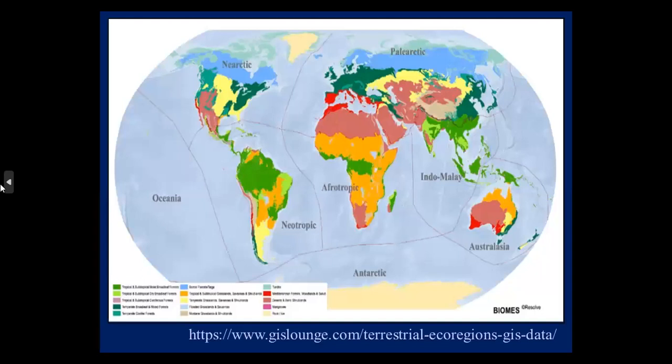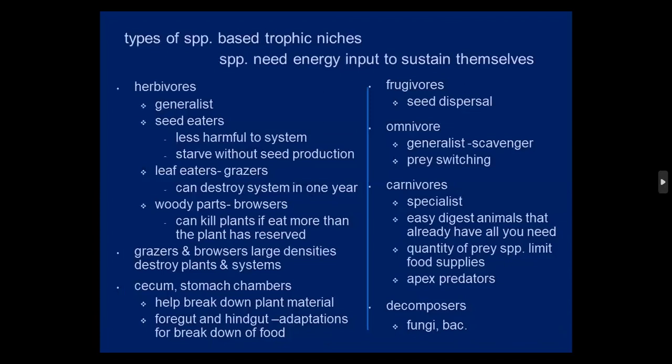Here we are in the Mediterranean climate in Chile — you'll see it around the Mediterranean, with those wet winters. Southern California has it also, along with Australia and South Africa. The tropics are around the equator, and the subtropics go further north and south.